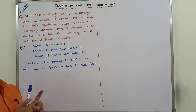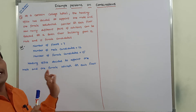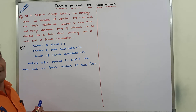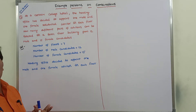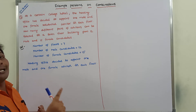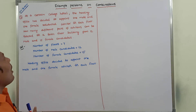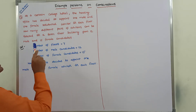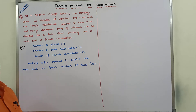The housing office decided to appoint one male and one female residential advisor for each floor. That means for each and every one of the 7 floors, one male advisor and one female advisor is assigned. We have to calculate how many different pairs of advisors can be selected for the 7-floor building among 12 male and 15 female candidates.